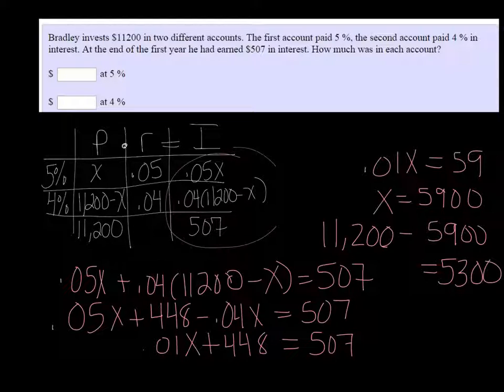So in the 5% account, he put 5,900. In the 4% account, he put 5,300.